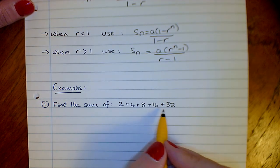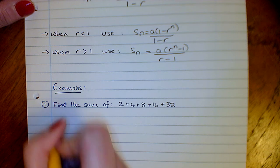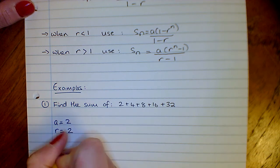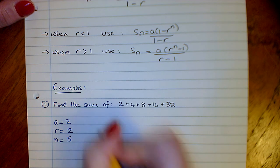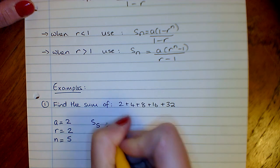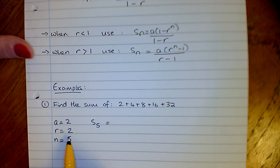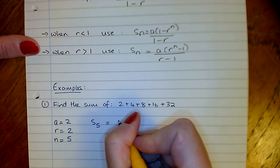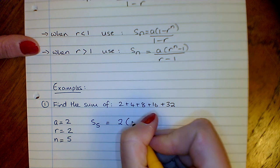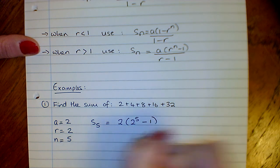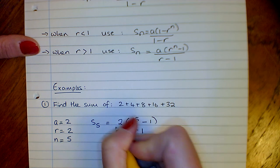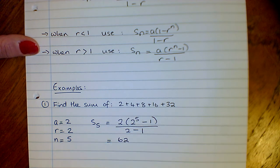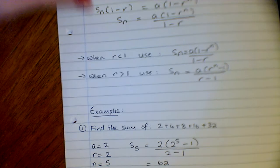Let's have a look. Find the sum of 2 plus 4 plus 8 plus 16 plus 32. A is 2, R is 2, and you can see we'll have five terms. R is greater than 1, so I'm going to use the second version. So it's 2 times (2 to the power of 5 minus 1) over (2 minus 1), and that works out to be 62.